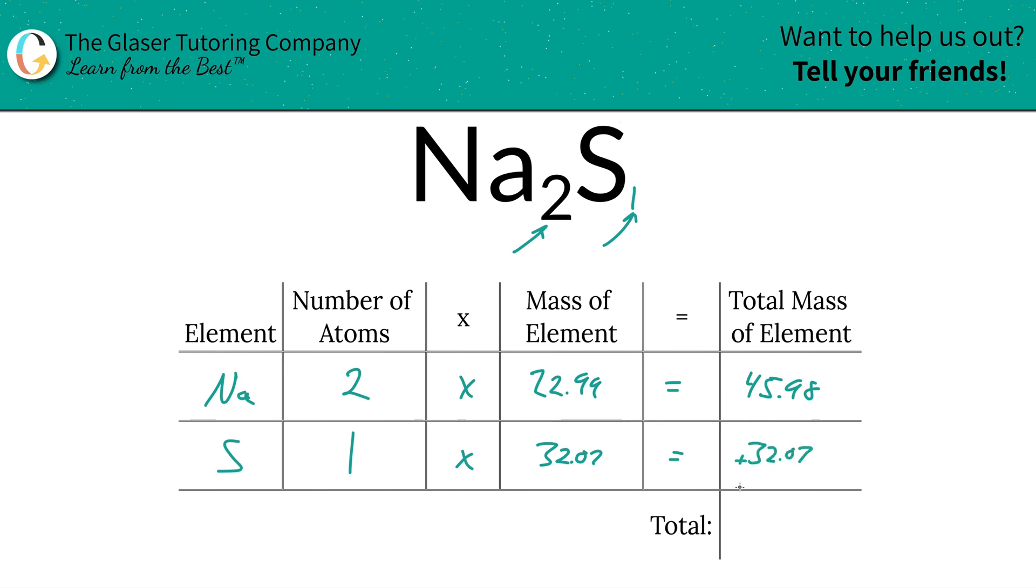Okay. And then to find the total mass of the entire compound, we simply just need to add this column on up. See how nice and easy that is. So that's going to be 78.05.